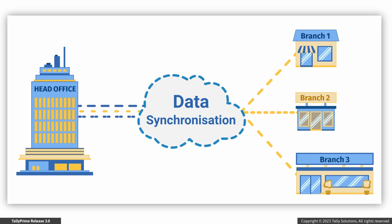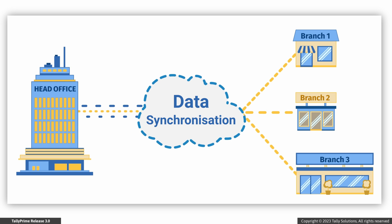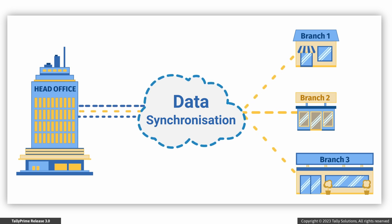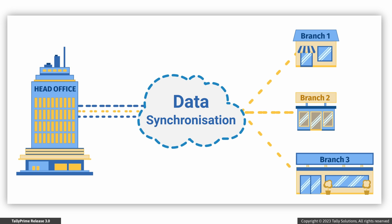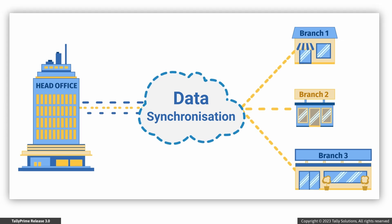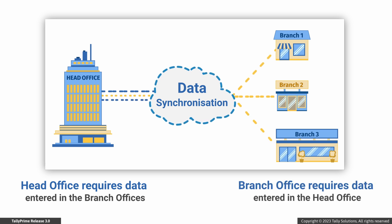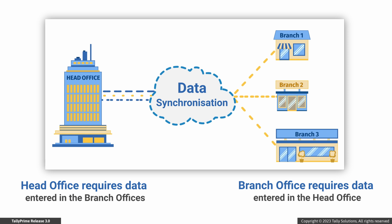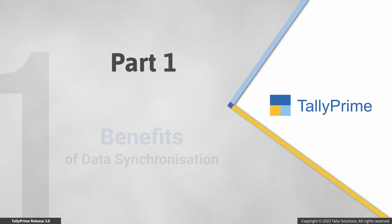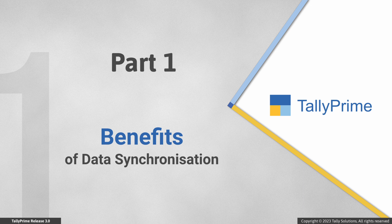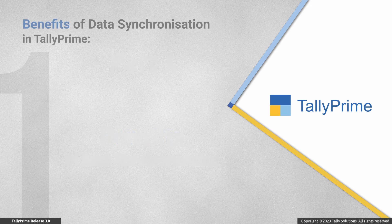For instance, you have a head office and regional or branch offices. The company data is managed separately, but the head office maintains data of all branches. So the head office requires updated data from branch offices, or the branch office may need some data from the head office. In such a case, you will need to synchronize company data.